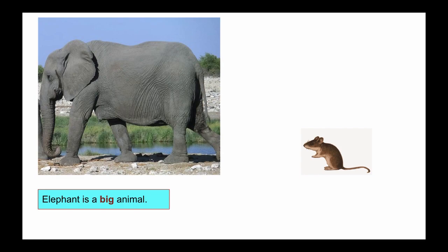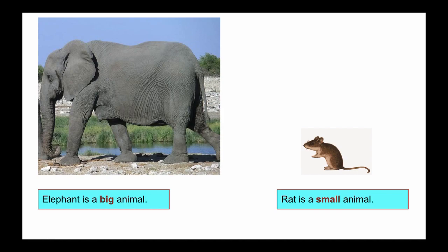Big means the size is very large. And for rat we will use: rat is a small animal, meaning small in size. So basically big and small are the terms used for the size of an object or animal. In mathematics we use big and small to describe the size of an object.